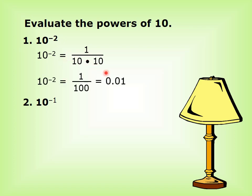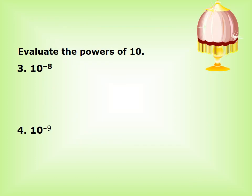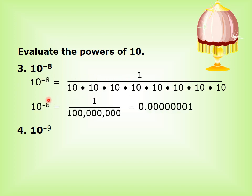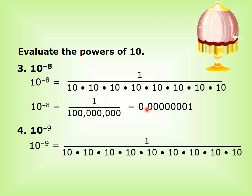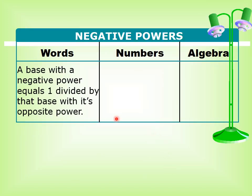Evaluating powers of 10: 10 power negative 2 equals 1 over 10 times 10, or 1 over 100, equals 0.01. 10 power negative 1 equals 1 over 10, or 0.1. 10 power negative 8 equals 1 over 10 multiplied by itself 8 times. 10 power negative 9 equals 1 over 10 multiplied by itself 9 times.